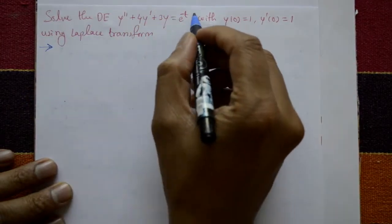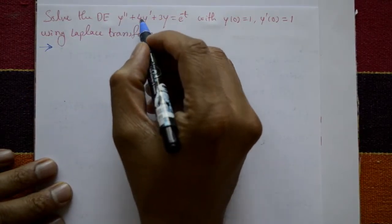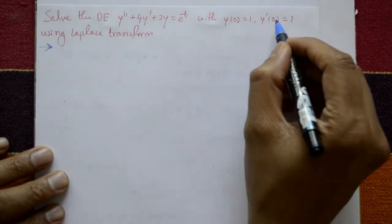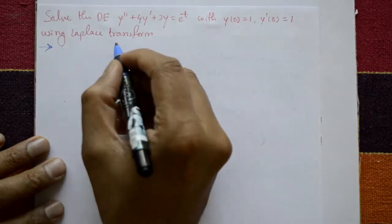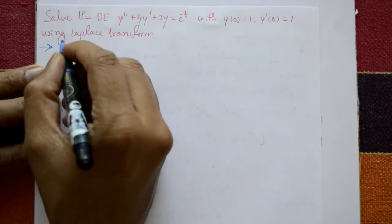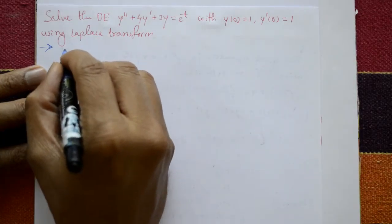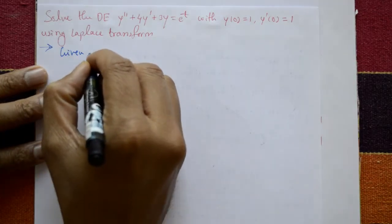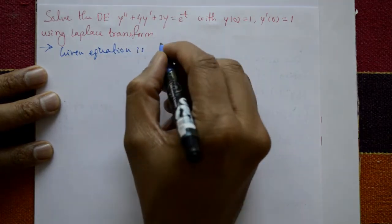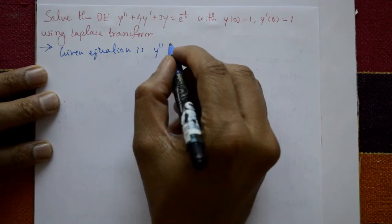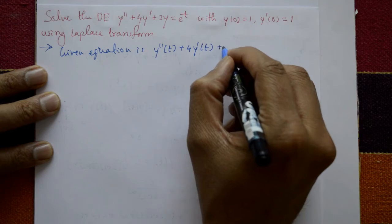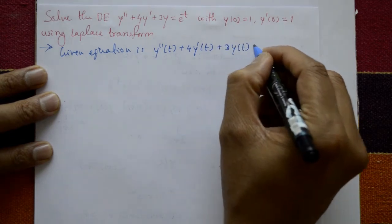Solve the differential equation y double dash plus 4y dash plus 3y is equal to e raised to minus t, with conditions y of 0 is equal to 1 and y dash of 0 is equal to 1, using Laplace transform. The given equation is y double dash of t plus 4y dash of t plus 3y of t equals e raised to minus t.